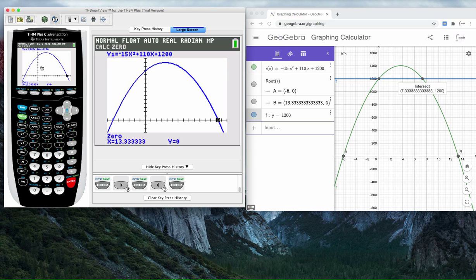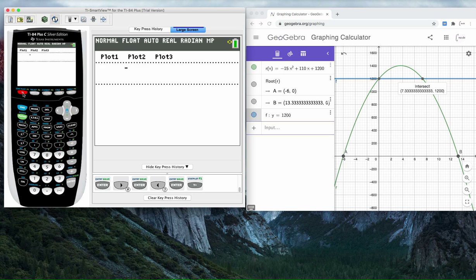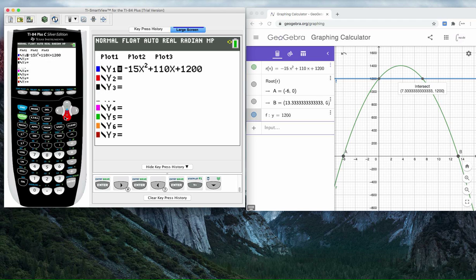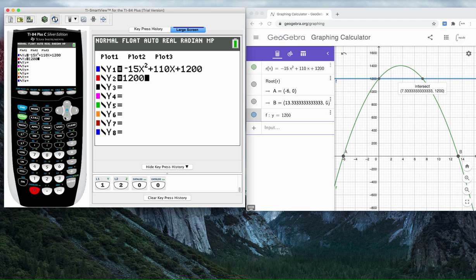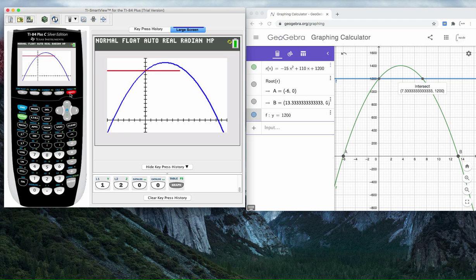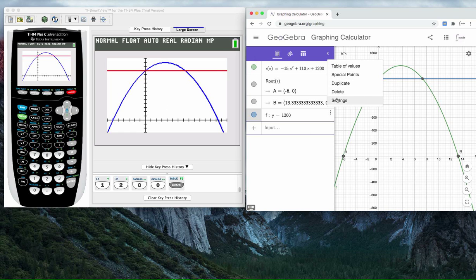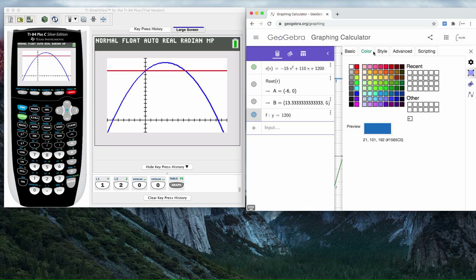Let's do the same thing with the TI. With the TI, we go to y equals. I'm going to go down to this next line and hit 1200. So y equals 1200 is my next graph. That will draw the same horizontal line I have. I can even quickly make sure the colors match. Let me go settings. I'm going to make my model, that's purple, into blue.